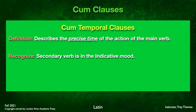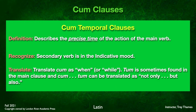Sometimes the verb in the subordinate clause will be indicative and sometimes it will be subjunctive. We call these cum temporal clauses because the secondary clause describes the precise time of the action of the main verb. You'll recognize a cum temporal clause because the secondary verb will be in the indicative mood. If you see cum in a clausal form — in other words it's introducing a clause and not being followed by an ablative — then you know it's a cum clause. The translation of cum in a temporal clause is 'when' or possibly 'while.' Tum is sometimes found in the main clause, and cum...tum can be translated as 'not only...but also.'